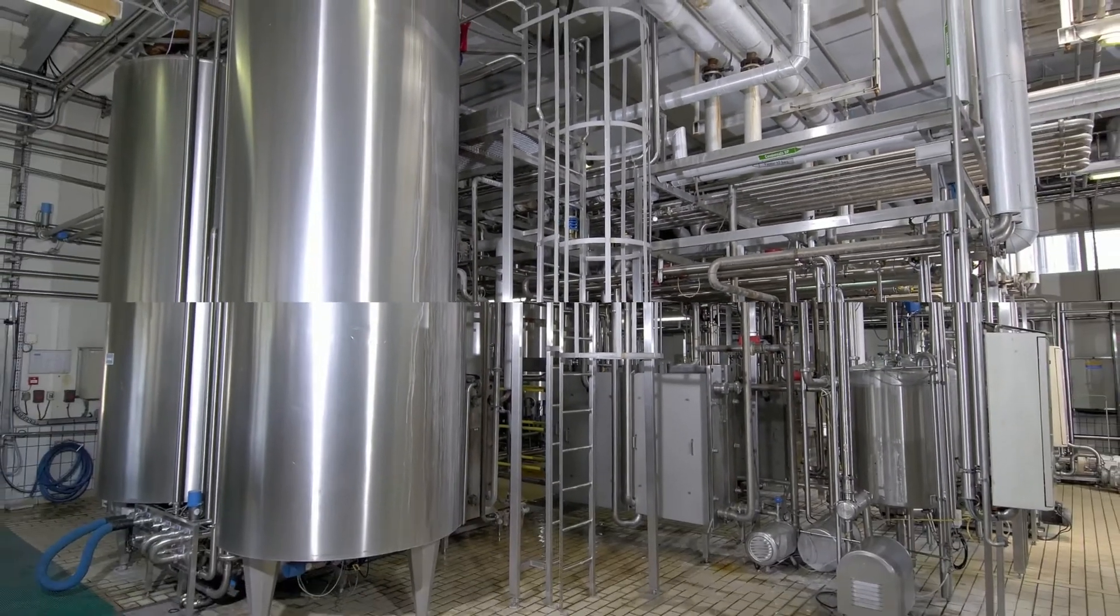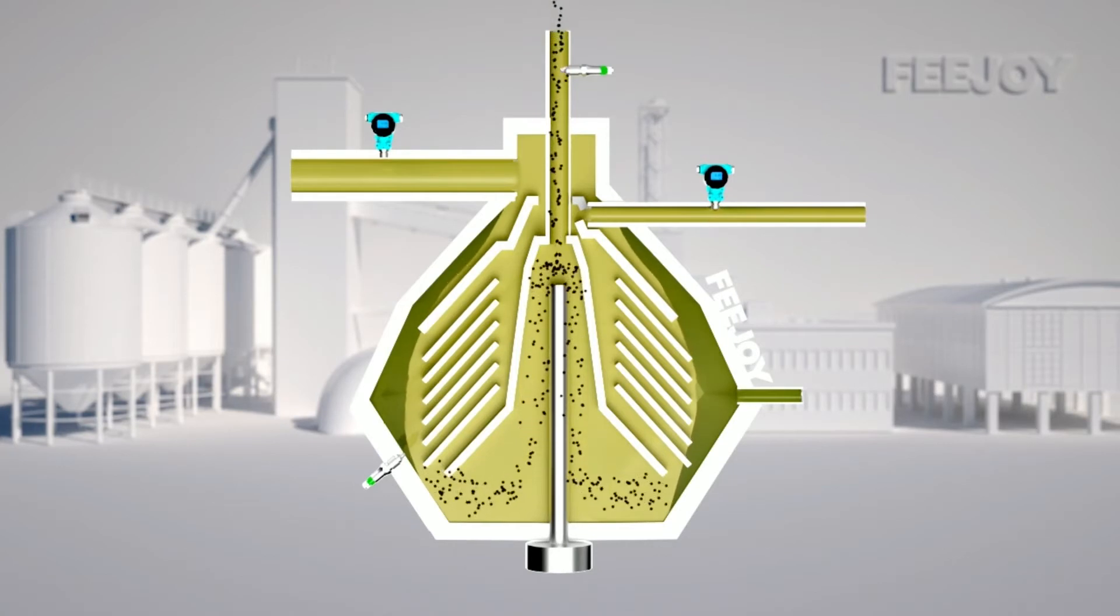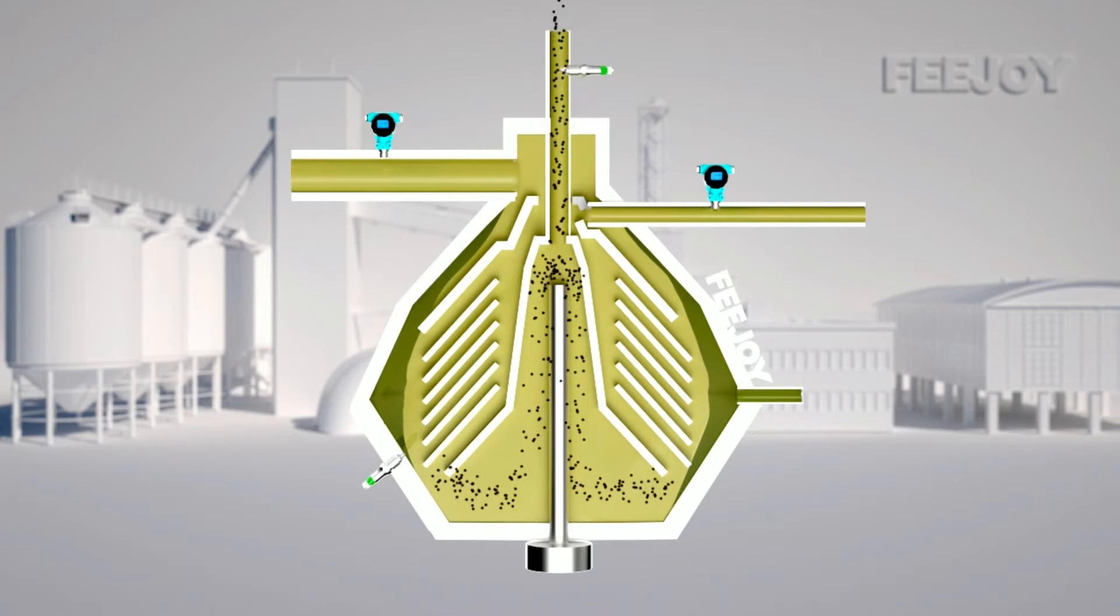To ensure the continuous supply of raw milk to the separator, a microwave level switch is generally used to monitor the liquid level in the separator, and a pressure transmitter detects the pressure in the conveying pipeline.